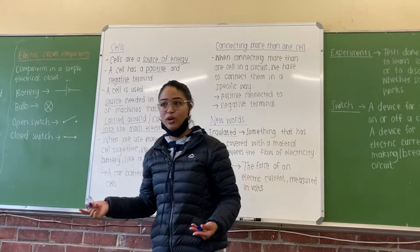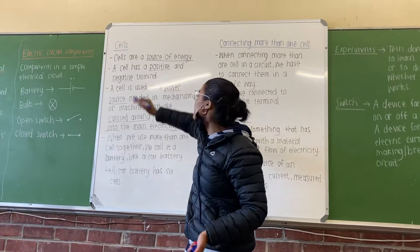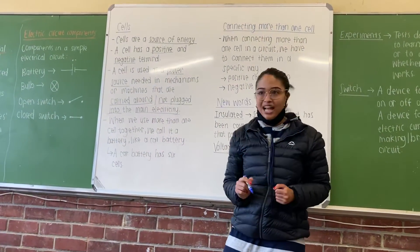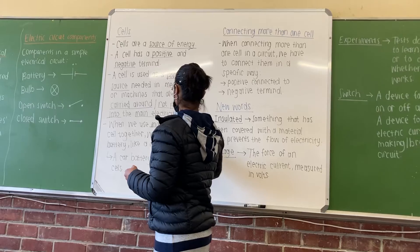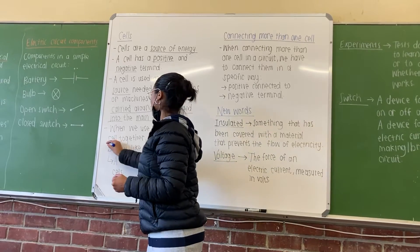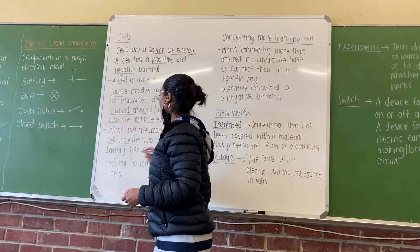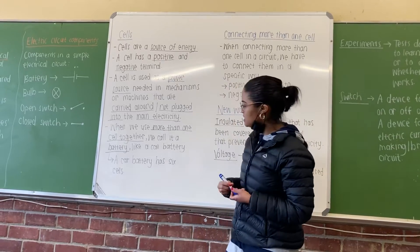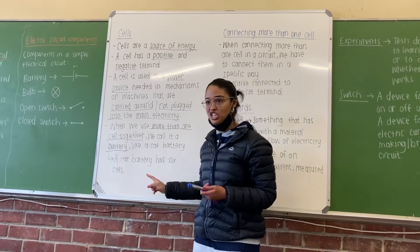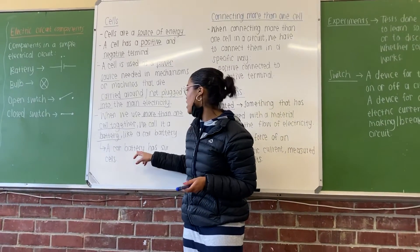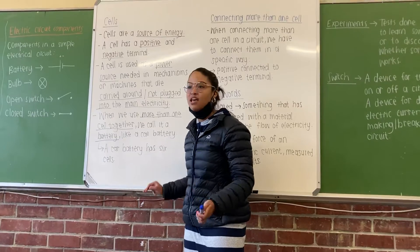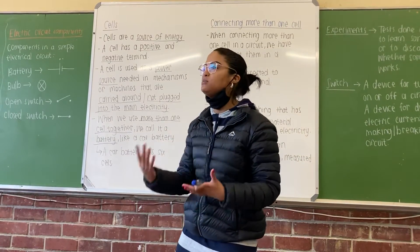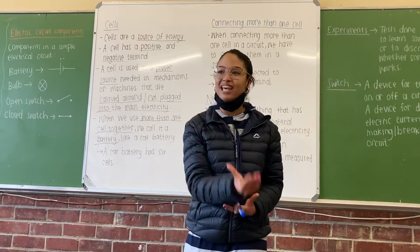That is when we use cells. When we use more than one cell together, we call it a battery. A car battery has six cells — that's why we can call it a battery, because there's more than one cell in it.